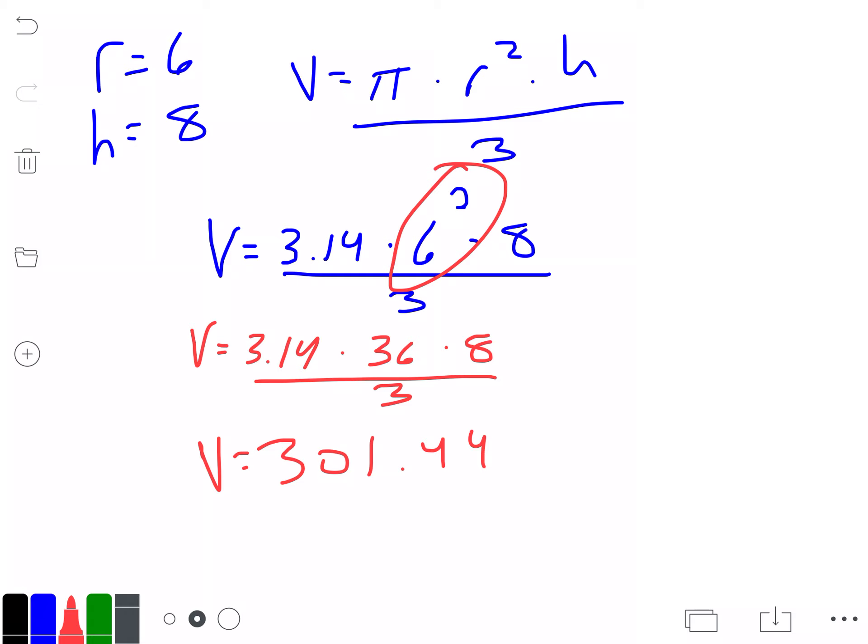So 301.44, which it says round to the nearest tenth. So that's this spot. So volume equals 301.4 cubic inches. Whenever you're dealing with volume, you're dealing with cubic inches when you have a three-dimensional shape of a cylinder, cone, or sphere.